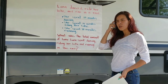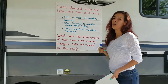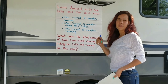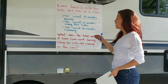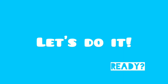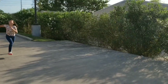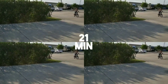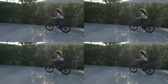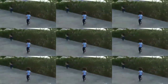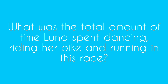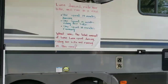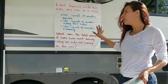Try to imagine first what is happening. I will help you with that — I have Luna here, so I will show you a small clip of her doing everything. Luna danced, rode her bike, and ran in a race. She spent 19 minutes dancing, 21 minutes riding her bike, and 30 minutes running. What was the total amount of time Luna spent dancing, riding her bike, and running in this race? Let's think about it. I hope you see more visually what this is telling us.